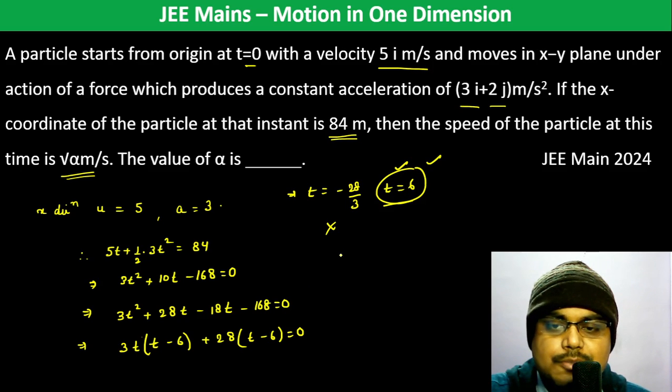The speed in x-direction will be u + at = 5 + 3(6) = 23 m/s. In y-direction, the speed will be 2(6) = 12 m/s.